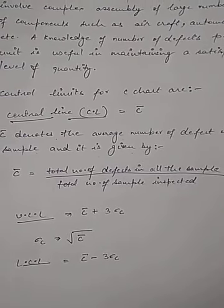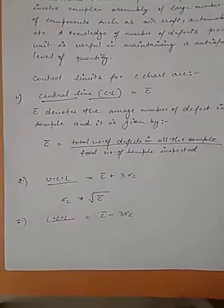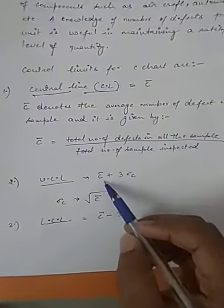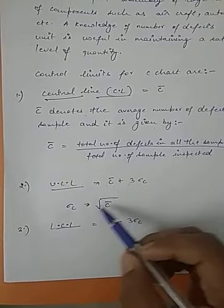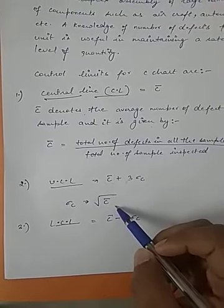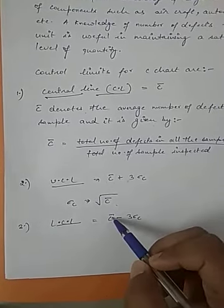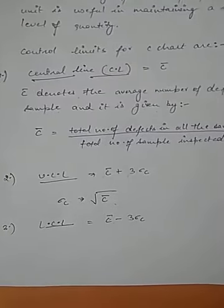Upper control limit is equal to C-bar plus 3 sigma-c, where sigma-c equals square root of C-bar. Lower control limit is equal to C-bar minus 3 sigma-c.